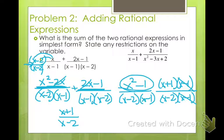Now, it said state any restrictions on the variables. So what are our restrictions when we have rational functions? Anything that makes our denominators be 0. So I have a 1 here, and I have a 2 here. And that's it.